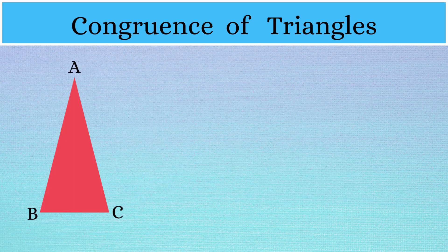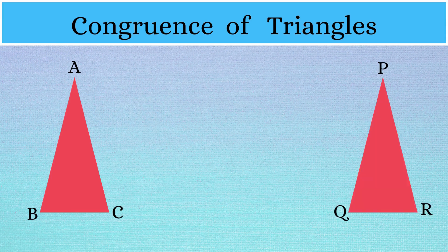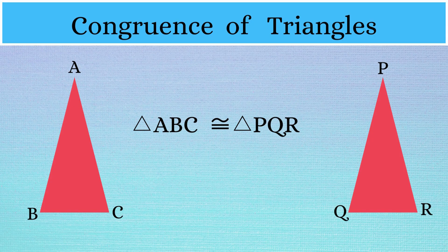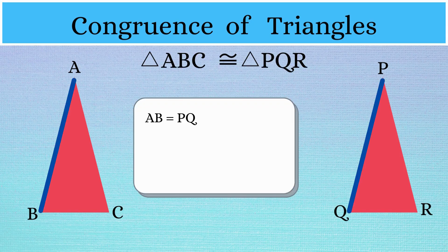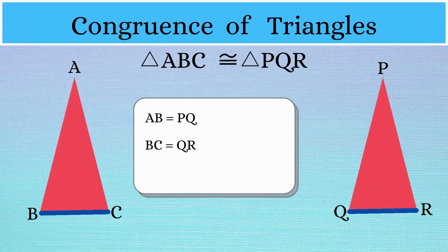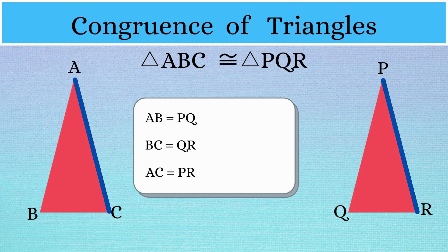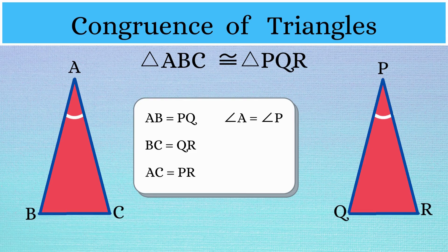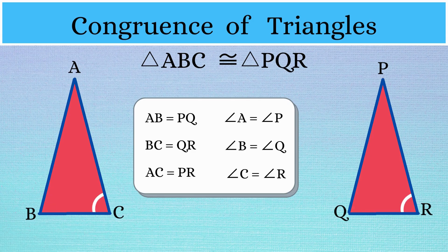Let's say that triangle ABC and triangle PQR are congruent. This implies that side AB is the same as side PQ, side BC is the same as side QR, and side AC is the same as side PR. Also, angle A is equal to angle P, angle B is equal to angle Q, and angle C is equal to angle R. That gives us a total of six conditions.